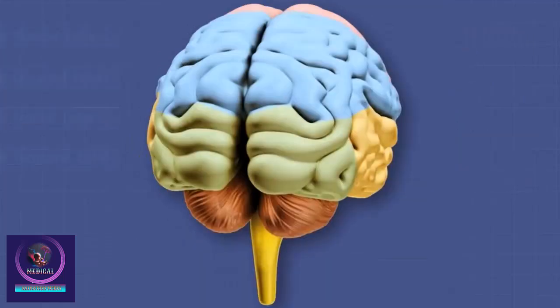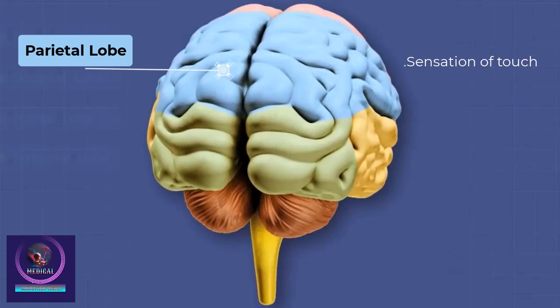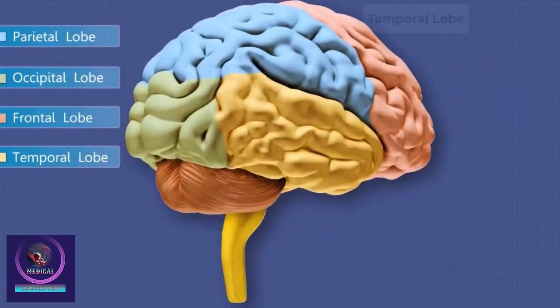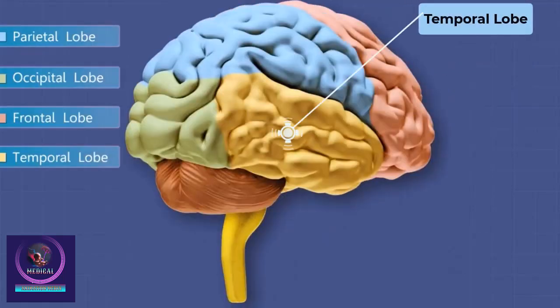Behind the frontal lobe is the parietal lobe. It is concerned with sensations such as touch, pressure, temperature, and pain.